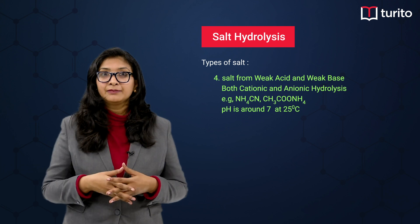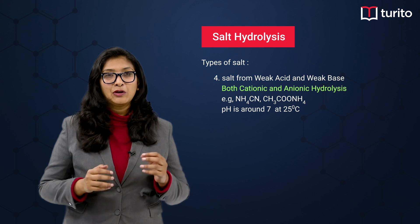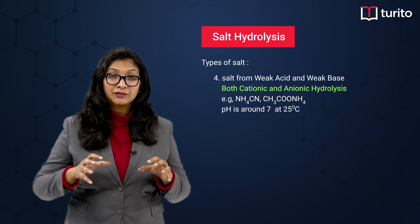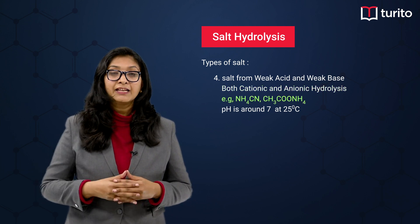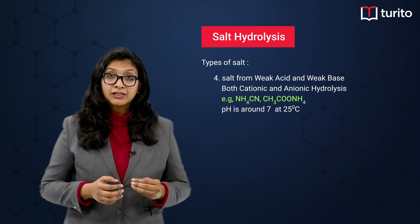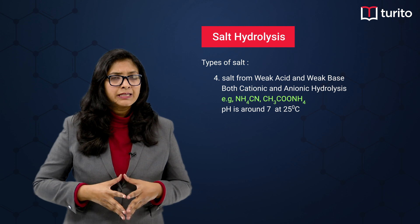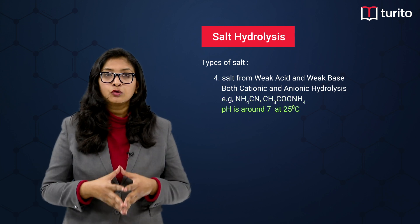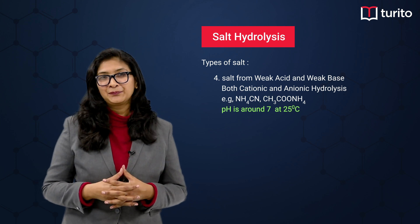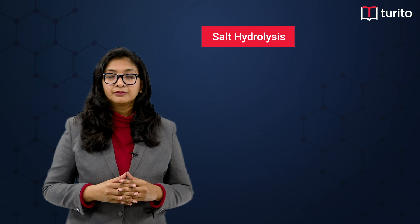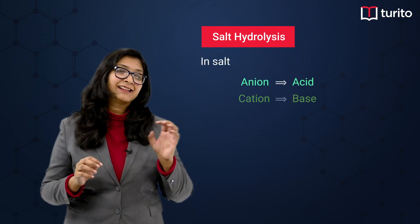The last type is salt made from a weak acid and a weak base. Here, both cationic as well as anionic hydrolysis will take place, because both the acid and base are weak. Examples are NH4CN and CH3COONH4. The pH will be very close to 7, because both the acid and base are weak.